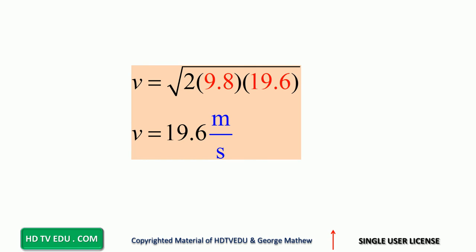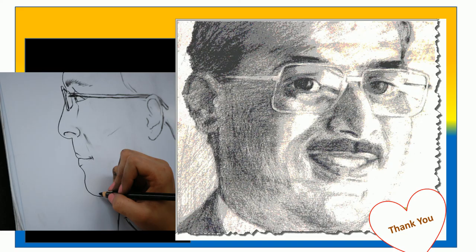Taking the square root of 2 times 9.8 times 19.6, we get 19.6 meters per second as the speed. This is George Matthew signing off — good luck, do well!